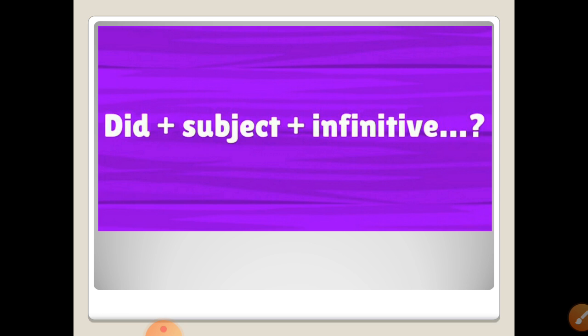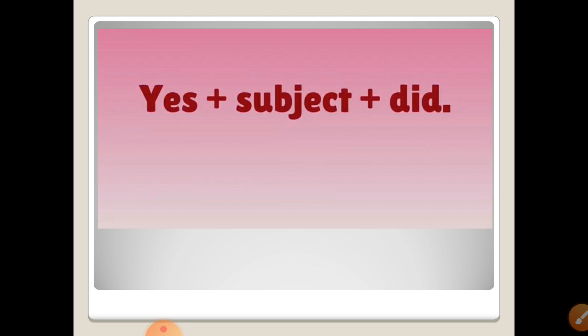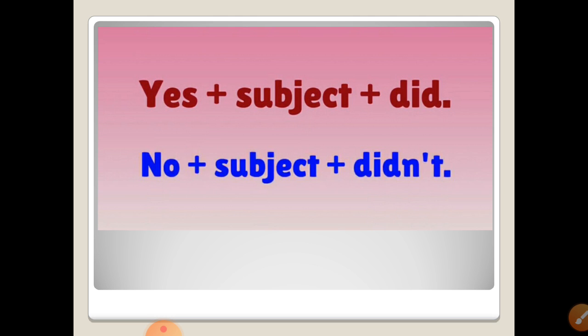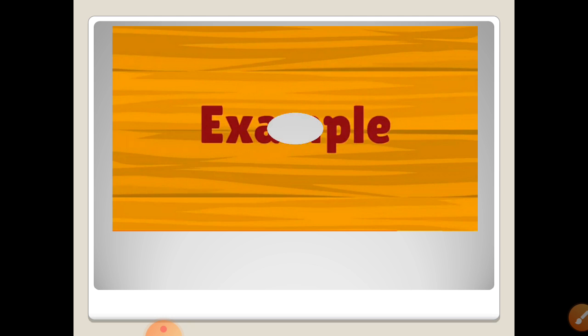So that's the form of my question in the past when it begins with did. After it immediately the subject and then infinitive, meaning the verb in its base form. The answer begins with yes and then subject and then did, like yes I did or yes she did, or no and the subject and didn't, like no he didn't or no I didn't. Example.